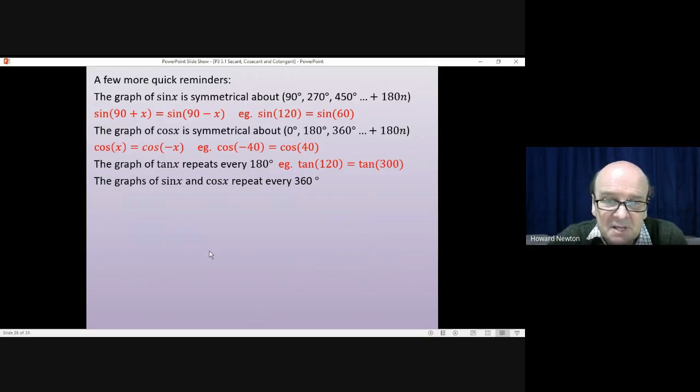The graphs of sine x and cos x, however, they repeat every 360 degrees. So, the sine of 30 would be the same as the sine of 390, if you add on 360.